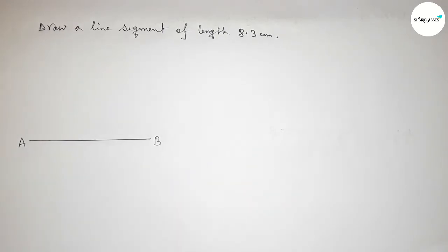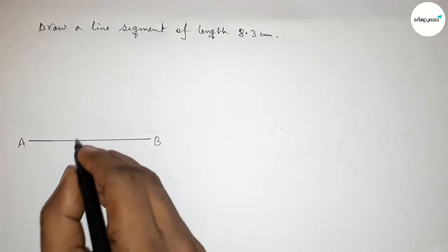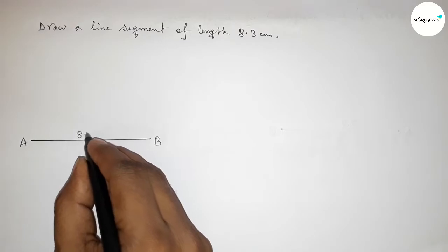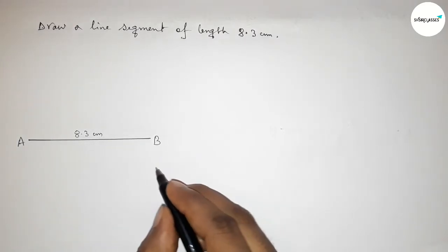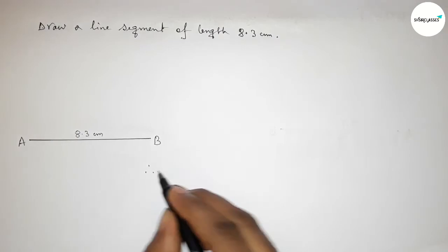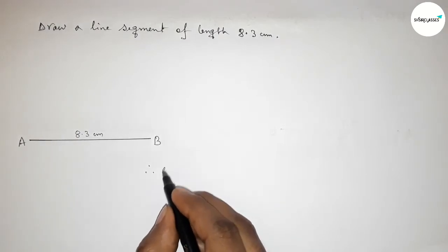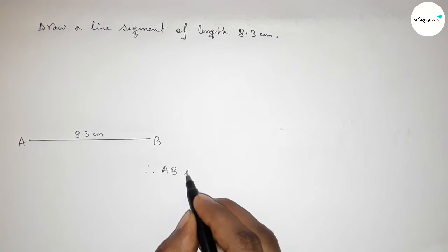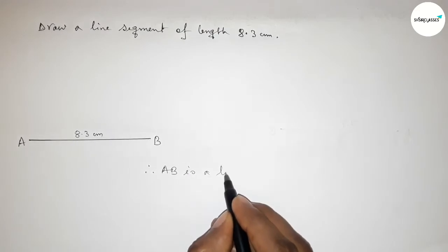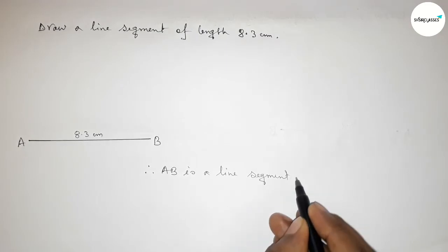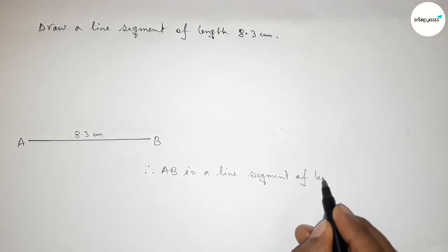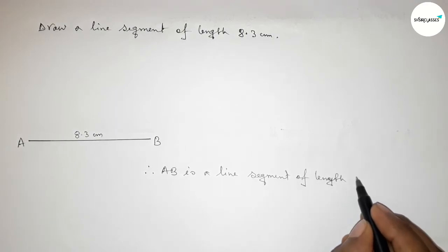Taking point A here and point B here. So AB is a line segment of length 8.3 centimeters. Therefore we can say that AB is a line segment of length 8.3 centimeters, drawn with the help of a scale.